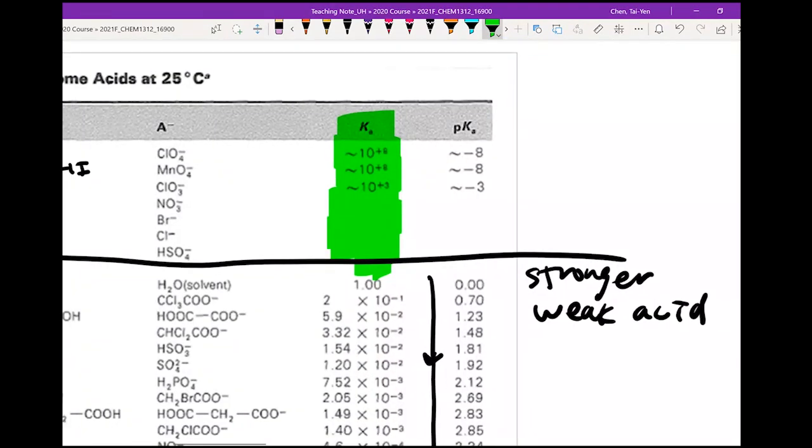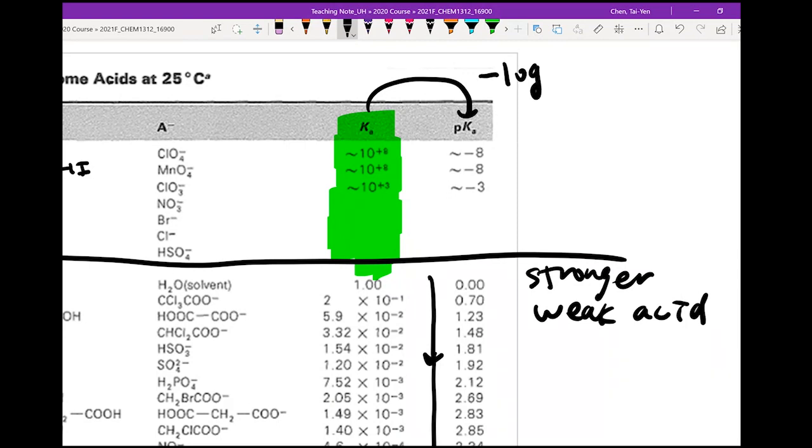Once you know Ka, you can also calculate pKa. Every time you put a lowercase p in front of a symbol, it means you take the negative log of that. So negative log of Ka gives you pKa.